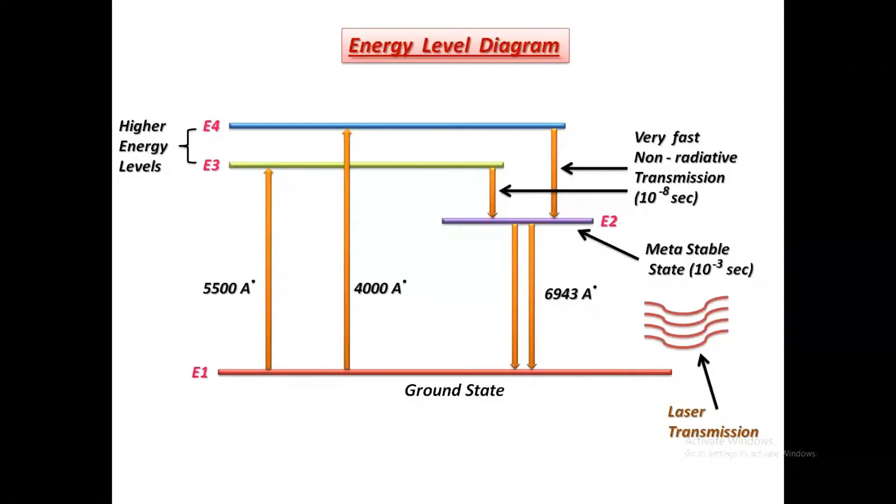The transition from E4 to E2 and E3 to E2 is non-radiative and given to the crystalline lattice. Since E2 is a metastable state, chromium ions remain for longer duration. Therefore, the number of chromium ions at E2 goes on increasing while at the same time number of ions in ground state goes on decreasing due to optical pumping. Thus, the population inversion is established between E2 and E1.